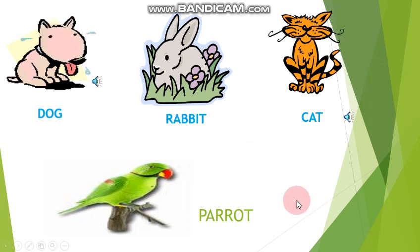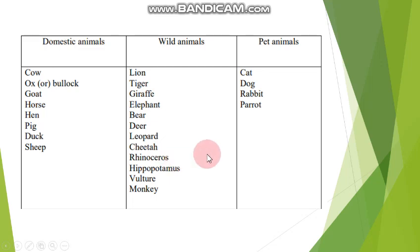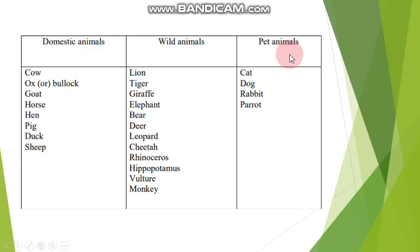These are the three types of animals. Domestic animals include: calf, ox, goat, horse, hen, pig, duck, and sheep. Wild animals include: lion, tiger, giraffe, elephant, bear, deer, leopard, cheetah, rhinoceros, hippopotamus, vulture, and monkey — they live in the jungle or forest. Pet animals include: cat, dog, rabbit, and parrot — they live with us. So the three kinds are: domestic animals, wild animals, and pet animals.